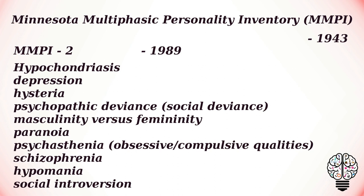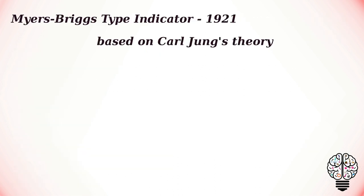The MMPI-2 clinical profile is composed of 10 scales: hypochondria, depression, hysteria, social deviance, masculinity versus femininity, paranoia, psychasthenia (that is, obsessive or compulsive qualities), schizophrenia, hypomania, and social introversion.